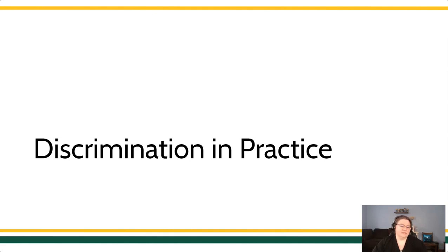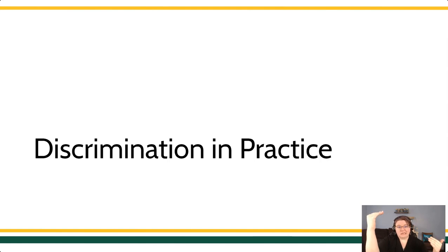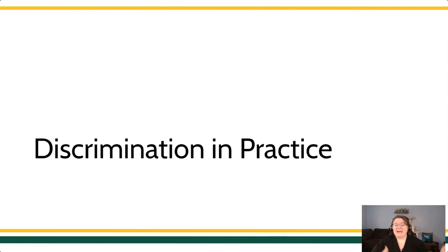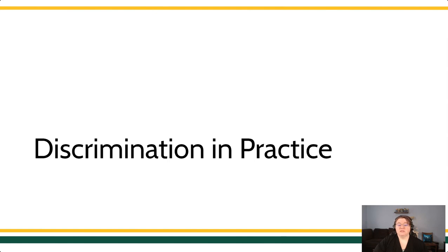So last time we talked about the basic definitions of discrimination training. We talked about behavior being under stimulus control, meaning the behavior is more likely in the presence of a discriminative stimulus than in the absence. We talked about the discriminative stimulus itself, which is a stimulus present when reinforcement is available, an S-delta present when the response will not contact reinforcement, and a discriminative stimulus for punishment present when punishment will occur if you emit a particular response, sort of like a cop waiting in a speed trap.